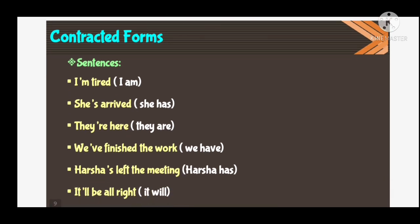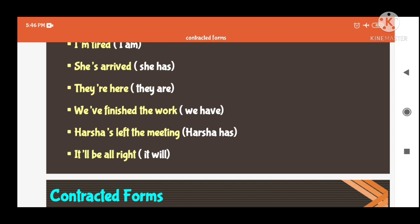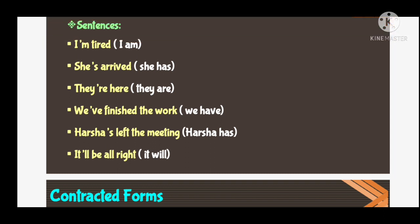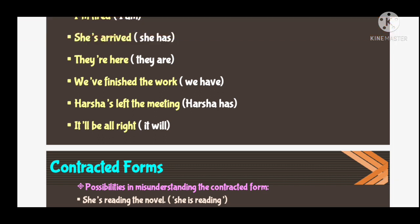Here are some examples of contracted forms. In the first sentence: 'I'm tired' — that means 'I am tired'. The second one: 'she's arrived' — that means 'she has arrived'. We need to understand the structure of the sentence. 'They're here' — that means 'they are here'. 'We've finished the work' — that means 'we have finished the work'. 'Harsha's left the meeting' — that means 'Harsha has left the meeting'. 'It'll be alright' — that means 'it will be alright'.